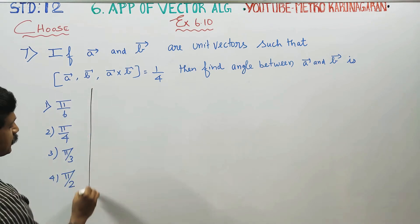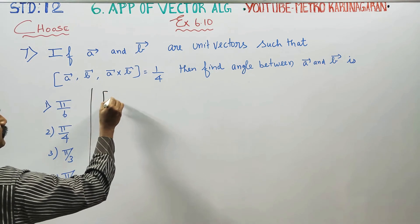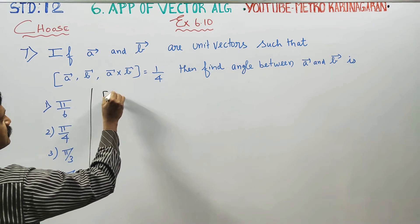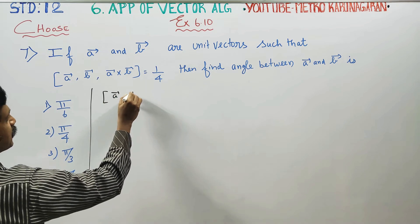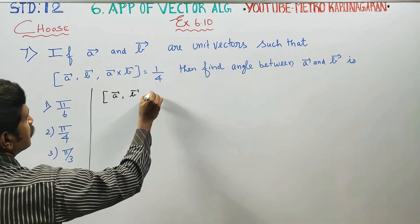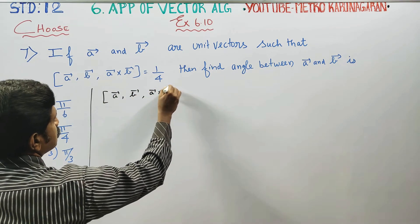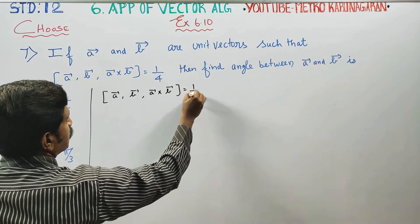First, we can get information about the scalar triple product. That is, a vector dot b vector dot (a cross b) is equal to 1 by 4.